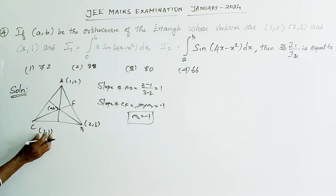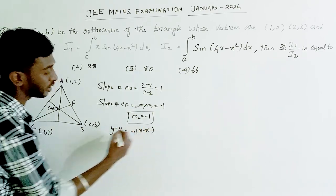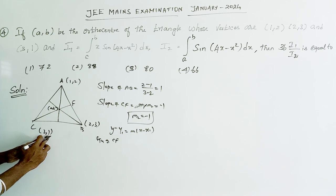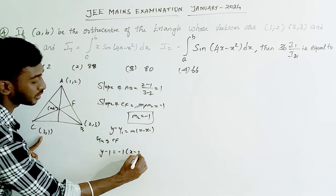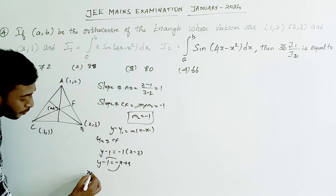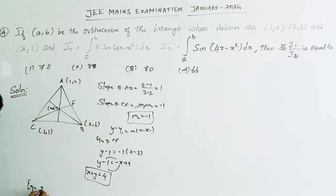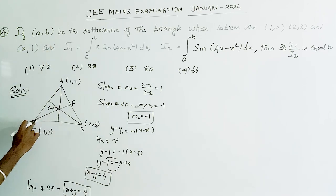Using point C(3,1) and slope -1, we apply the point-slope equation: y - y1 = m(x - x1). Substituting: y - 1 = -1·(x - 3), which gives y - 1 = -x + 3, so x + y = 4. That is the equation of line CF.